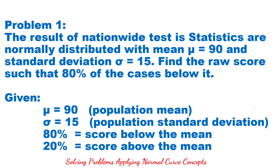The givens from our problem are: the population mean equals 90, the population standard deviation equals 15. The score below the mean is 80%, and 100% minus 80% equals 20%, which is the score above the mean.